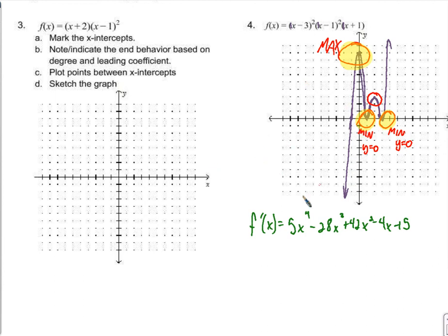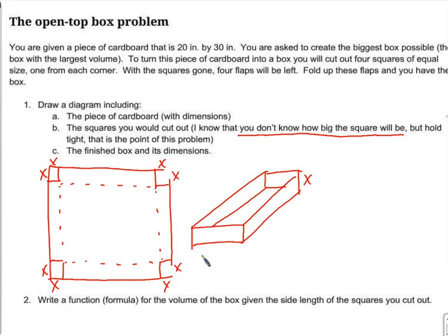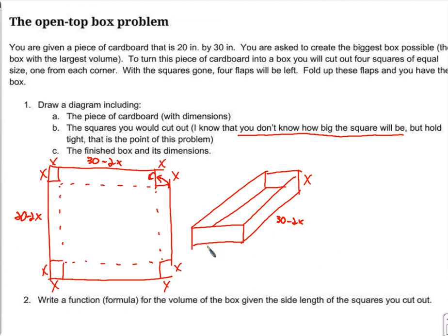There's a pretty good graph with all the maximum and minimum values marked. Now we'll move on to the box problem. We cut out squares of side length x from the corners, fold up the flaps, and make a box. The height is x. The length starts at 30 but we cut an x from each side, losing 2x, giving 30 minus 2x. The width starts at 20 and also loses 2x, giving 20 minus 2x.